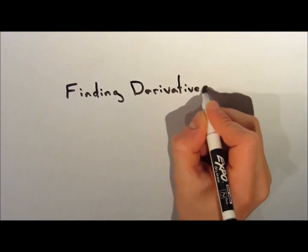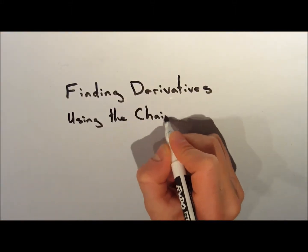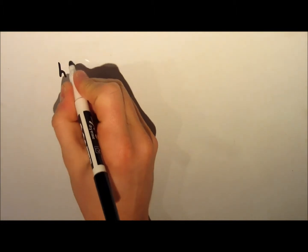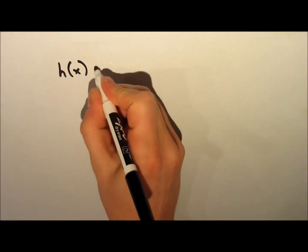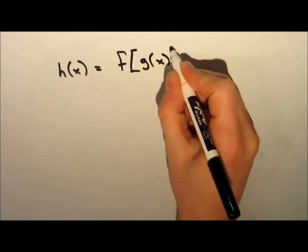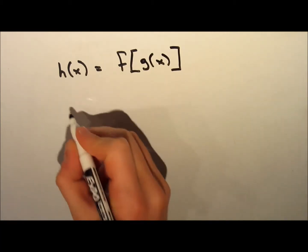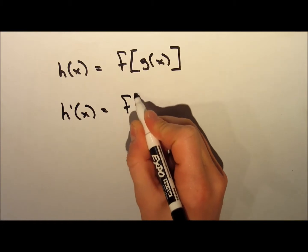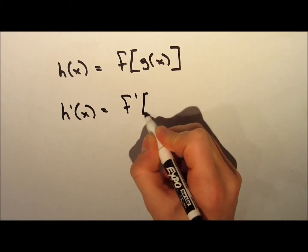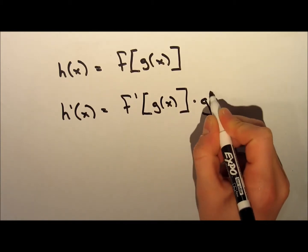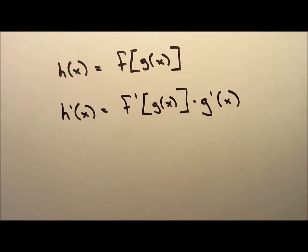Hi guys, so in today's video we're going to be talking about finding derivatives using the chain rule. We need to use the chain rule any time we take a derivative of a composition of functions. So if we have a function h of x and it consists of the composition of functions f of g of x, then the derivative h prime of x is equal to f prime of g of x multiplied by the derivative of g of x. It might make more sense when I go into a couple of examples.